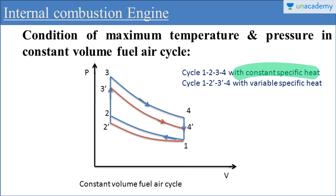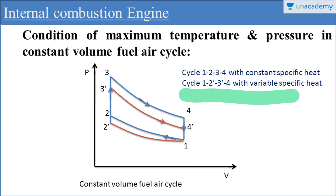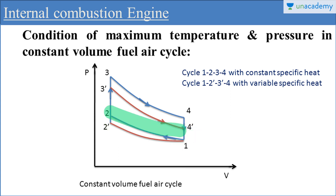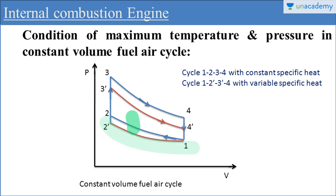You can also see here cycle 1, 2 dash, 3 dash, and 4 dash. This cycle is the cycle with variable specific heat, and this variable specific heat means it is the fuel air cycle. Here we are considering during process 1, 2 — this 1, 2 is for the air standard cycle — and process 1, 2 dash is for the fuel air cycle. For both processes we are considering reversible adiabatic compression.